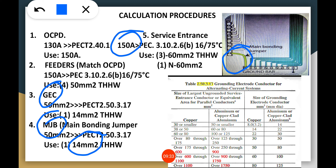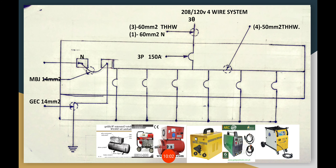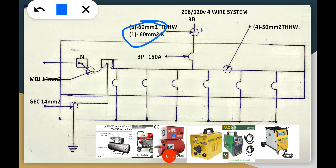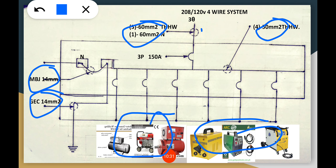For the service entrance, we use the 150-ampere rating and go to Table 310.2.6b16 at 75 degrees — 75 degrees because it is over 100 amps. With a full neutral, the neutral is 60 mm² TX-HW, the same size as the phase conductors at 60 mm² TX-HW. Summary: supply is 240/120V 3-phase system, with 3 × 60 mm² TX-HW for service entrance, 4 × 50 mm² TX-HW for the feeder, MBJ at 14 mm², GC at 14 mm², serving a group of motorized and non-motorized welding machines.